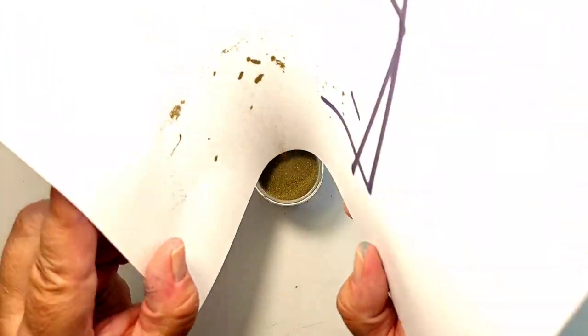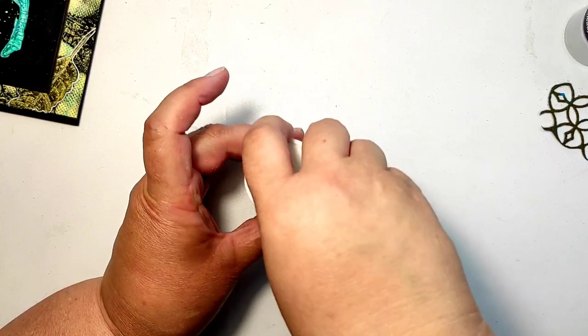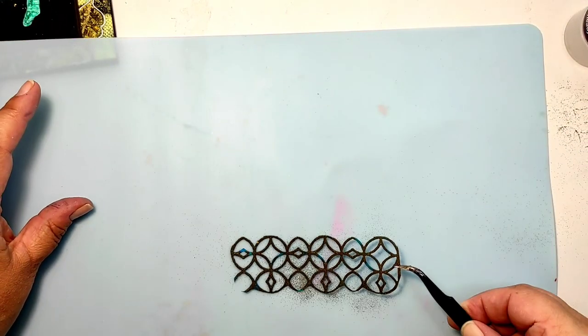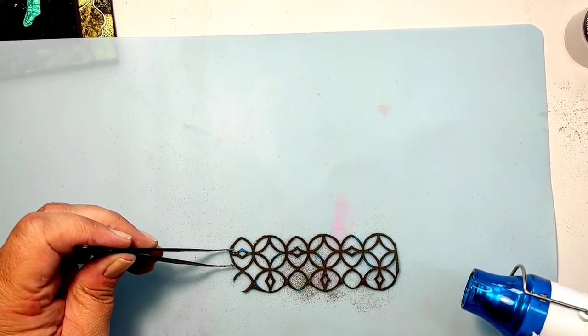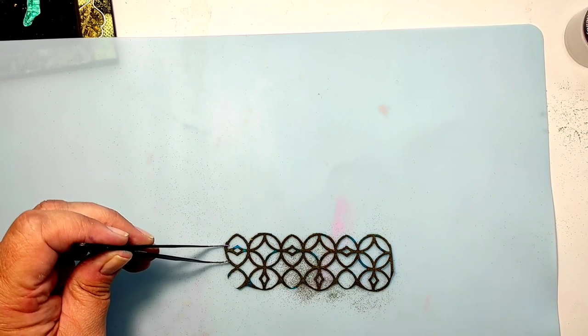I covered the die cut with glycerin. Because I want slightly grungier look, I used a brush which gives me an uneven coating. And then the golden embossing powder.